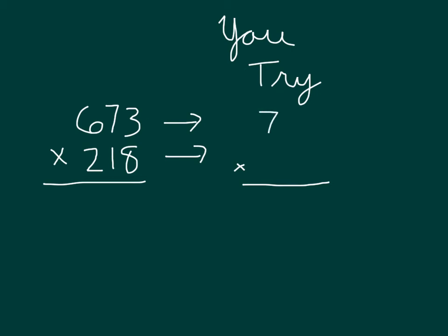673 would round to 700, 218 would round to 200, so an estimated product of this problem would be, you can place four zeros, and then 7 times 2 is 14. I'll place a comma, and so 700 times 200 is 140,000, and this here is our estimated product.